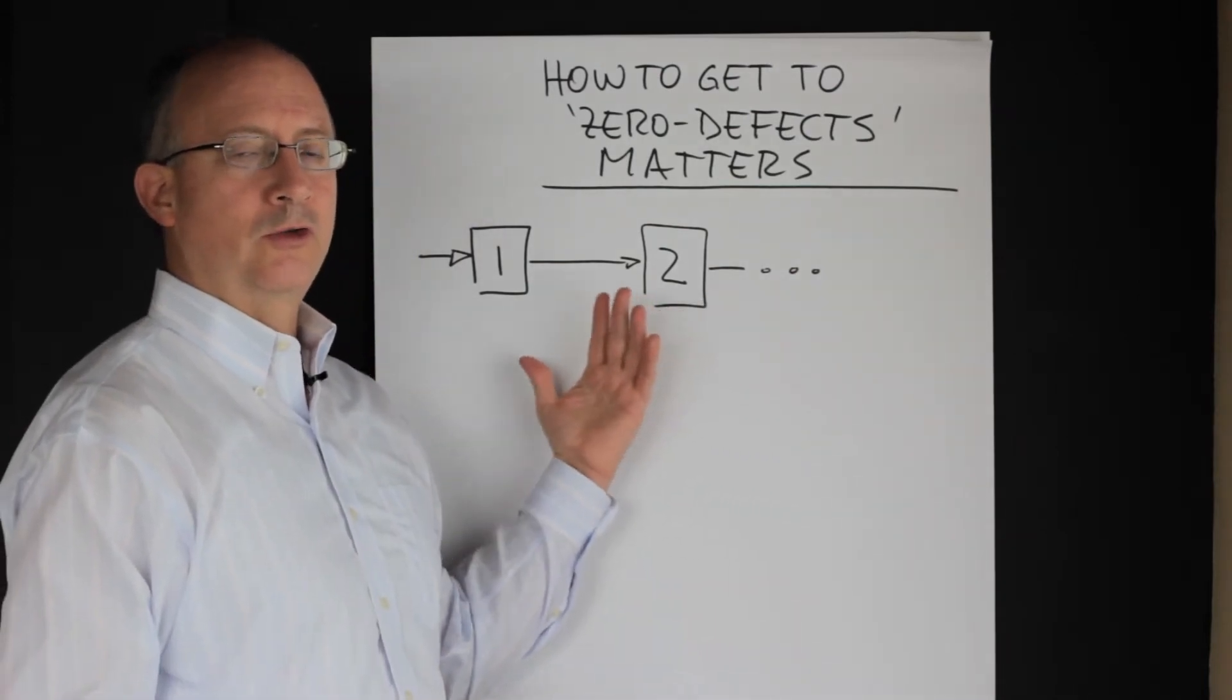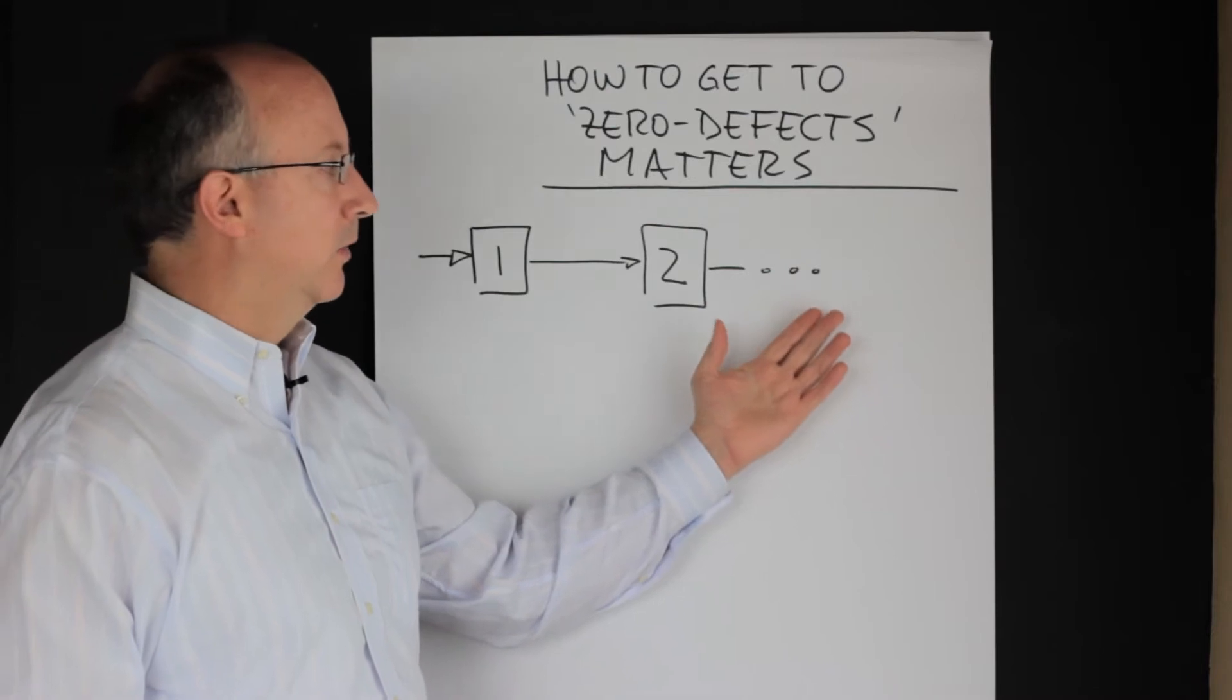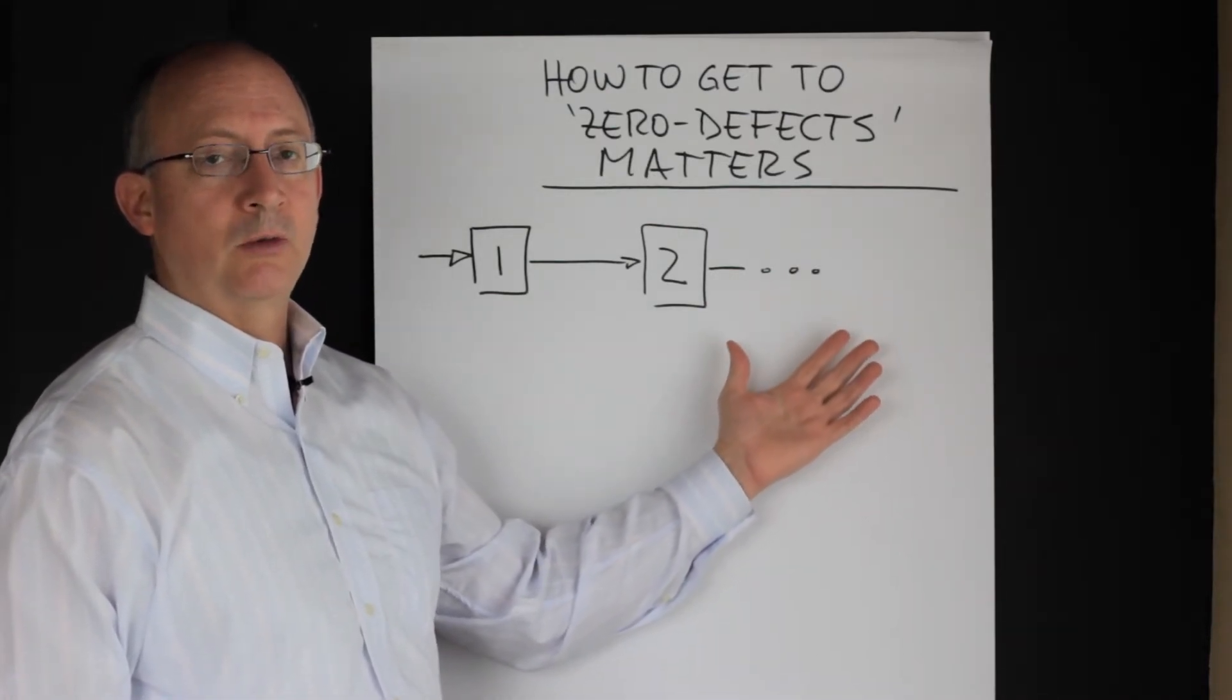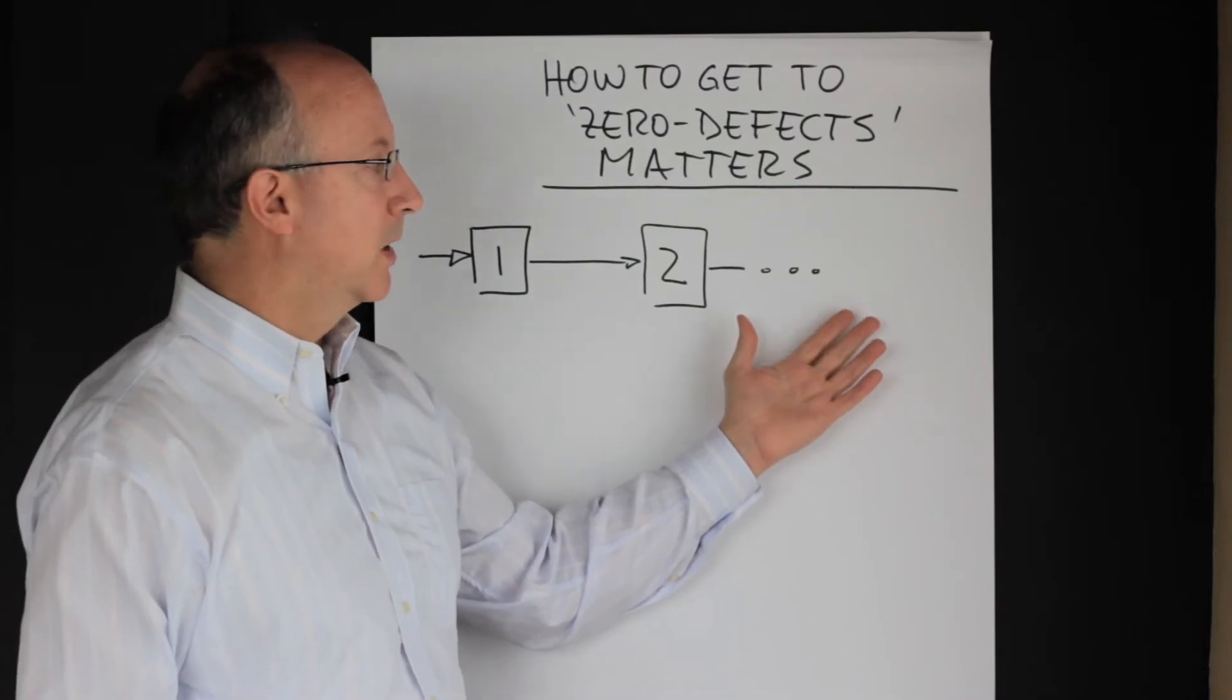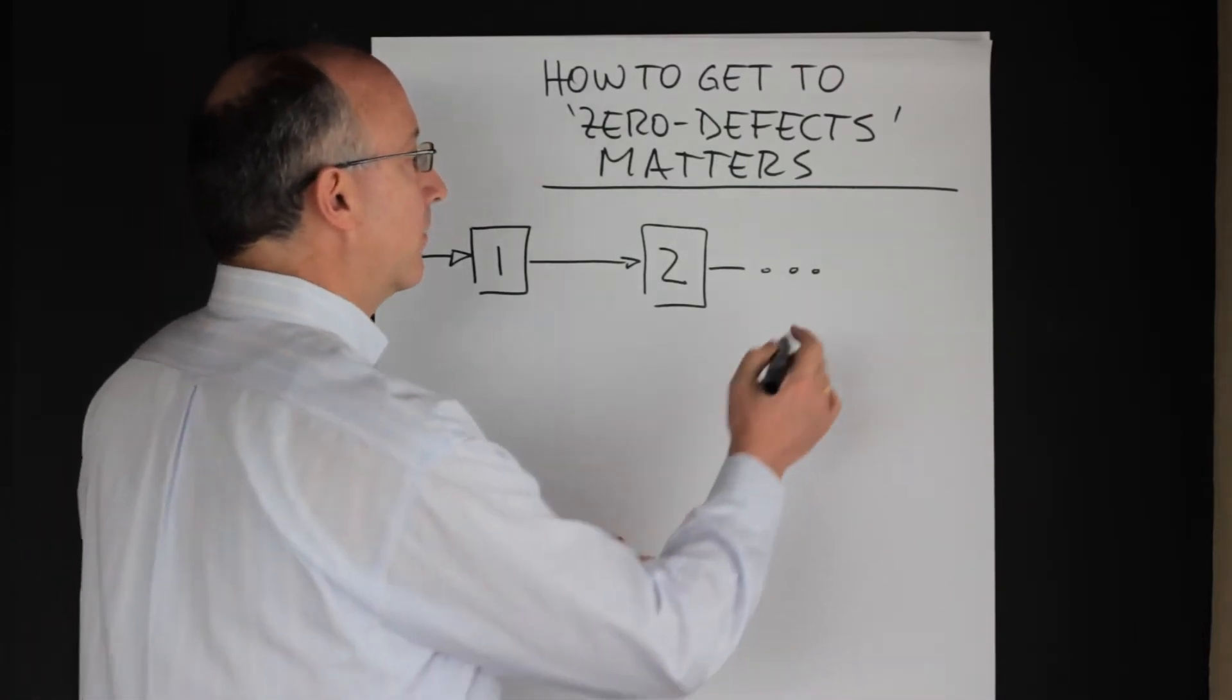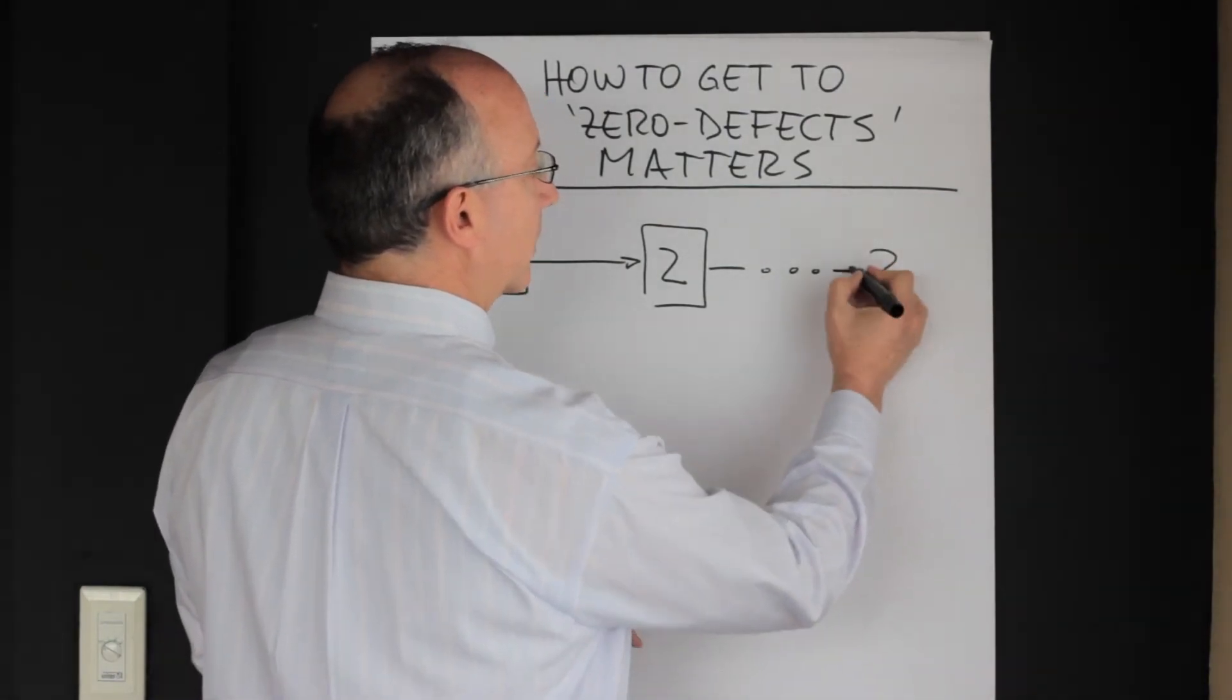One way to ensure that there is no bad product coming out of this would be to insert an inspection point at the end, which is what we traditionally would call quality control, and then make sure that if things are good they go and if they aren't they don't.